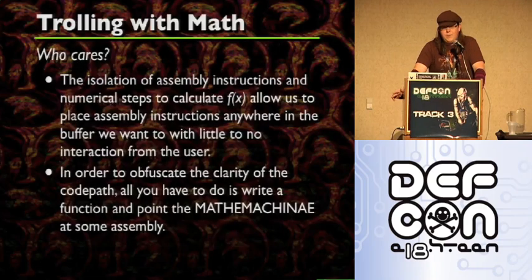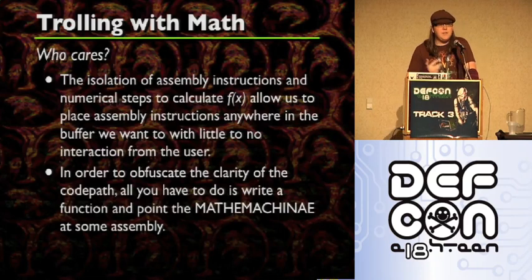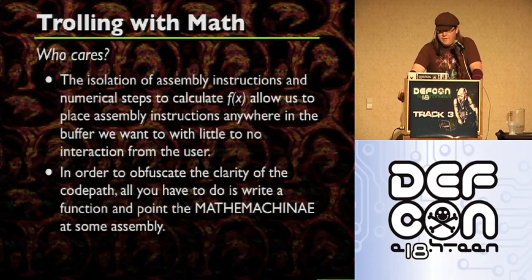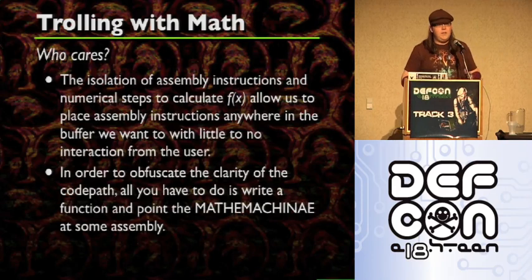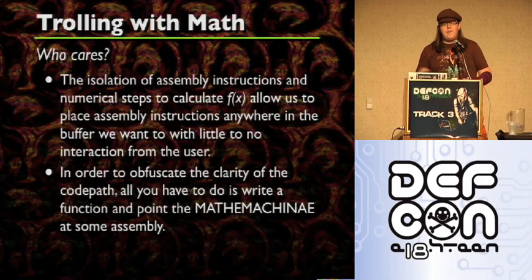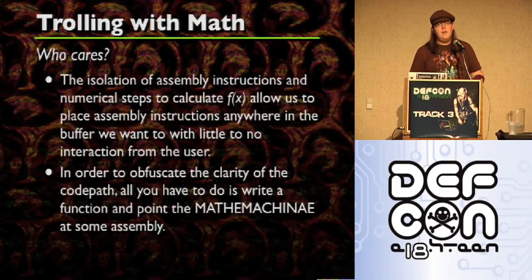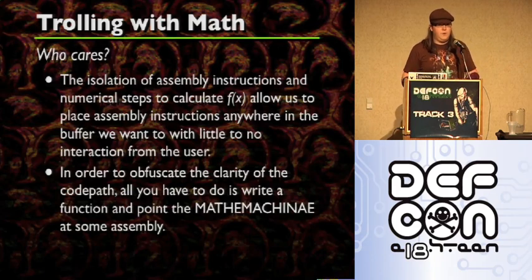So why does this really matter? Is this really just a trick and pony show, or is it actually doing anything useful, or does it just look pretty? The actual utility of this is that once you isolate the assembly instructions, we can put the individual assembly instructions anywhere we want simply based on a formula, rather than having to write an entire function that will likely be fingerprinted by AV. You can just write a whole series of mathematical functions that will draw a whole bunch of assembly onto the code and into memory.